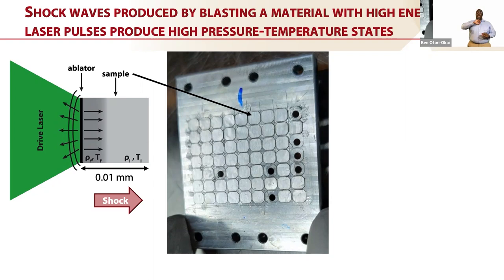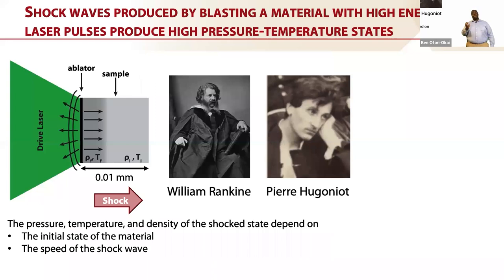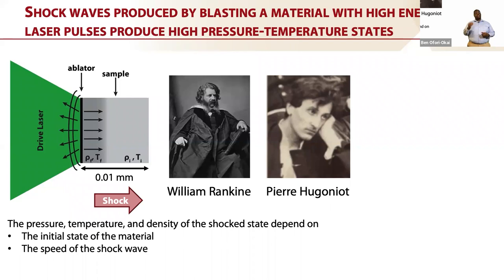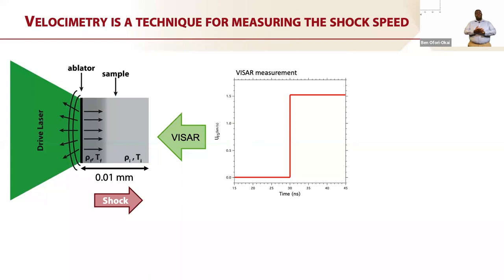After we've hit the laser onto our ablator and launched the shock wave into the material, the shock wave propagates through and changes the material from an initial pressure, temperature, and density to a different pressure, temperature, and density. The conditions for that were worked out by physicists William Rankine and Pierre Hugoniot — they determined that if you know the initial temperature, initial pressure, and initial density, you can figure out the final temperature, pressure, and density based on the shock wave speed. So for our experiments, knowing the shock wave velocity is a really important parameter because it tells us what state we've driven the material into.